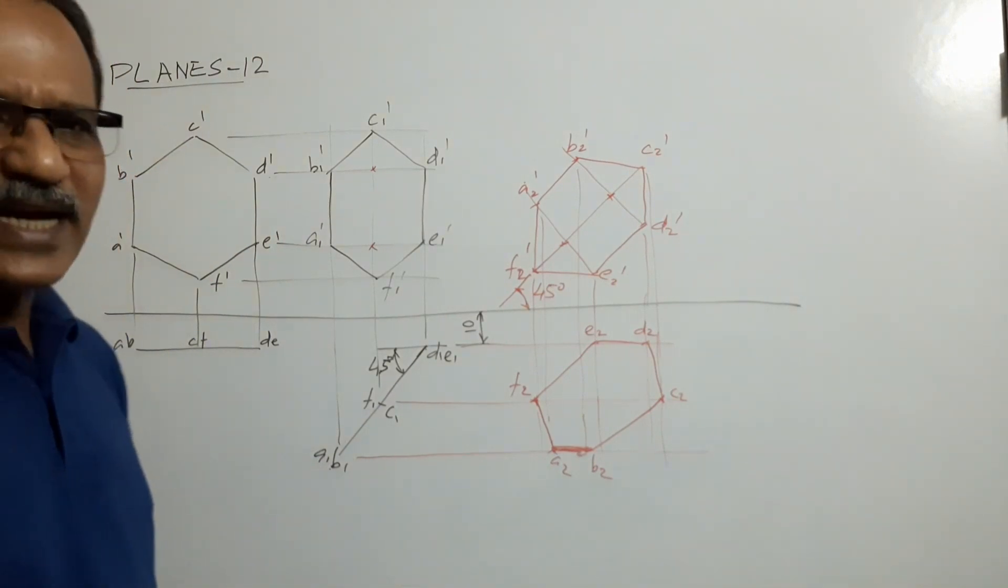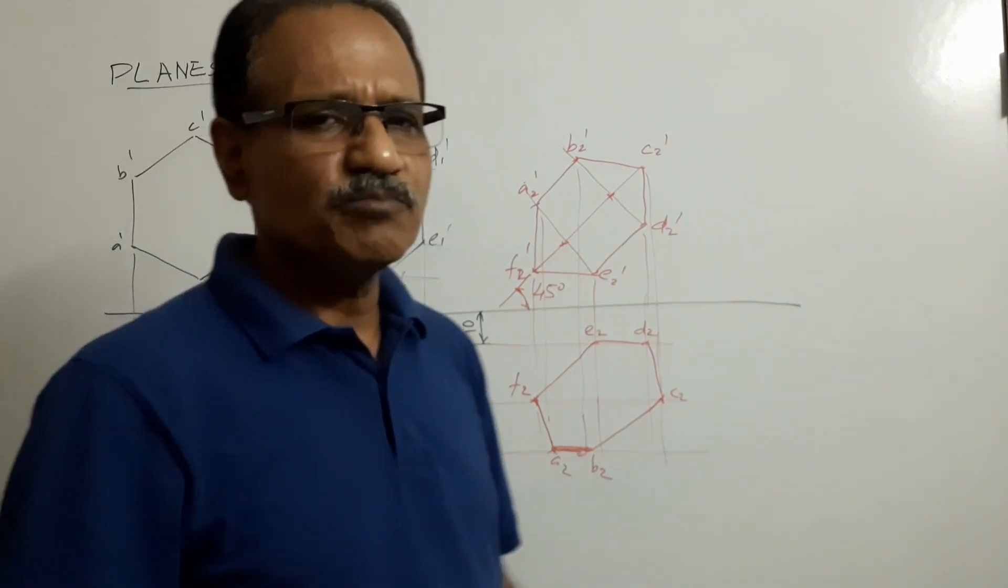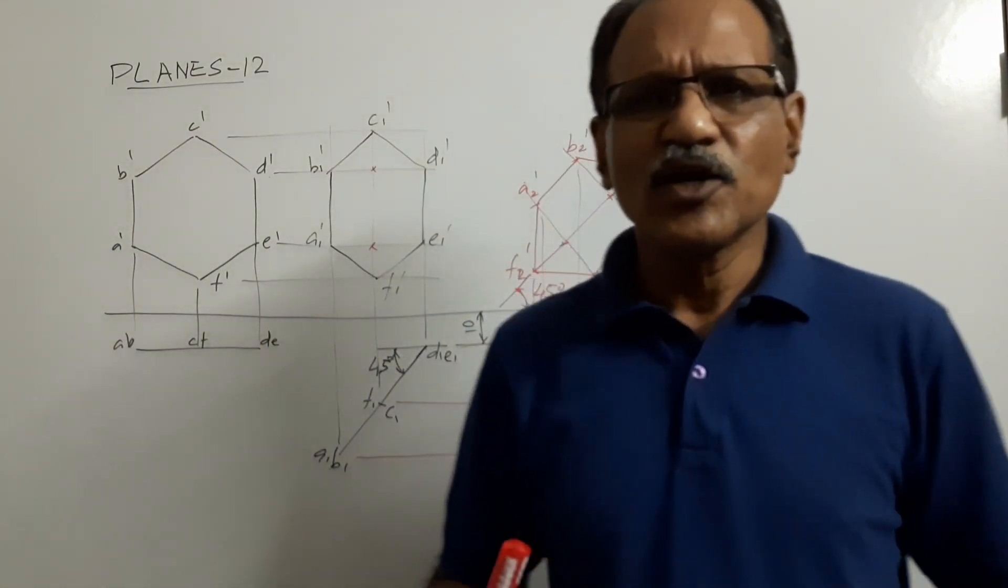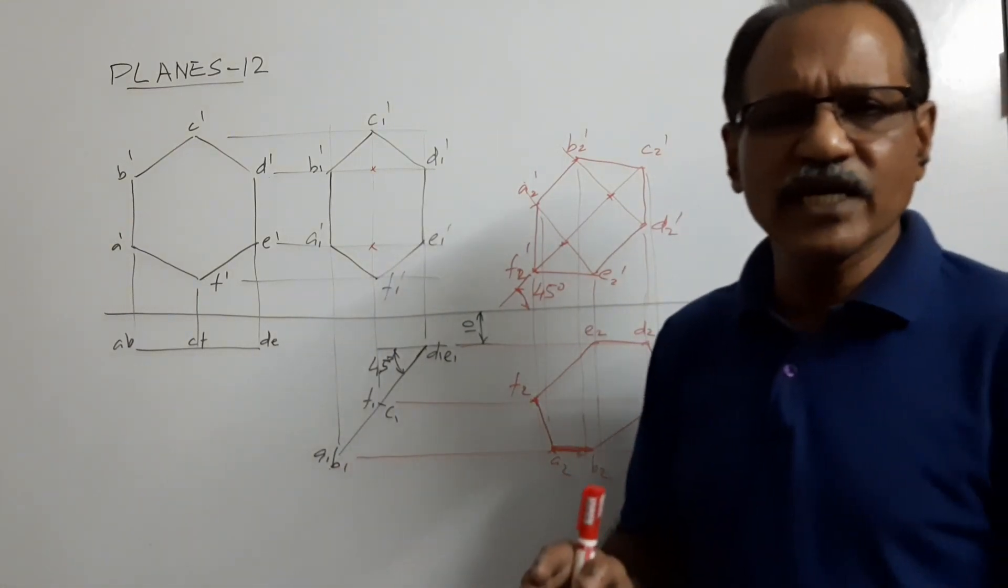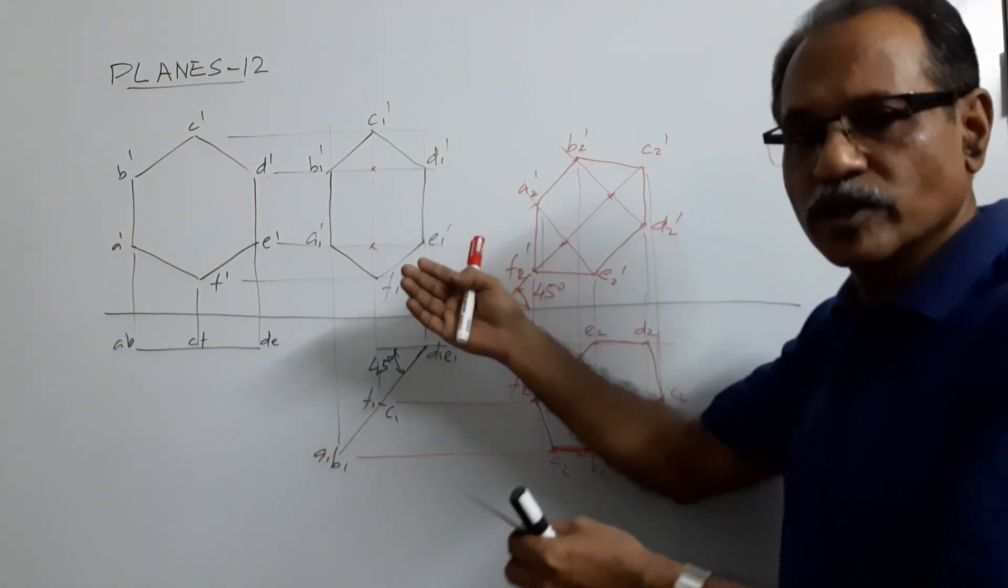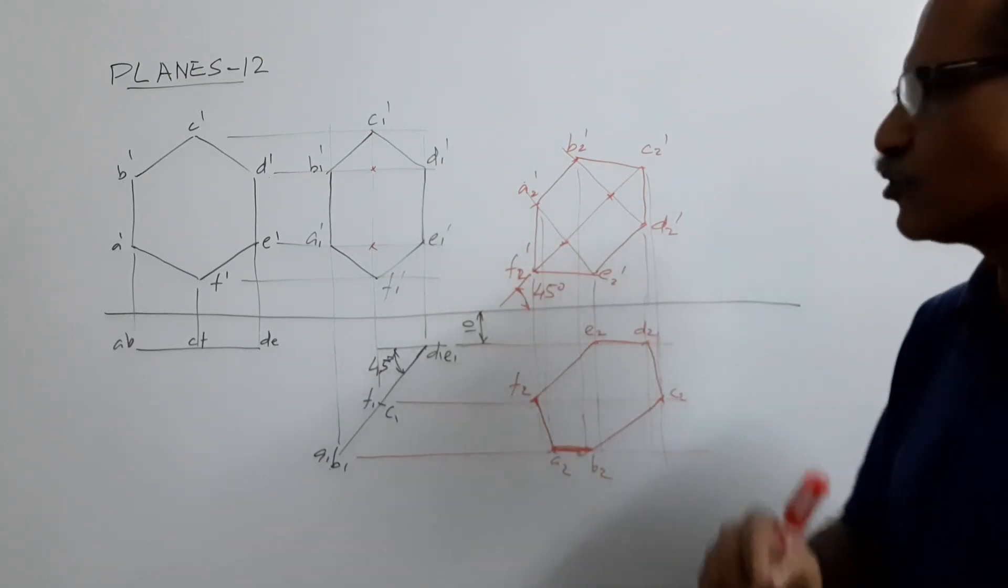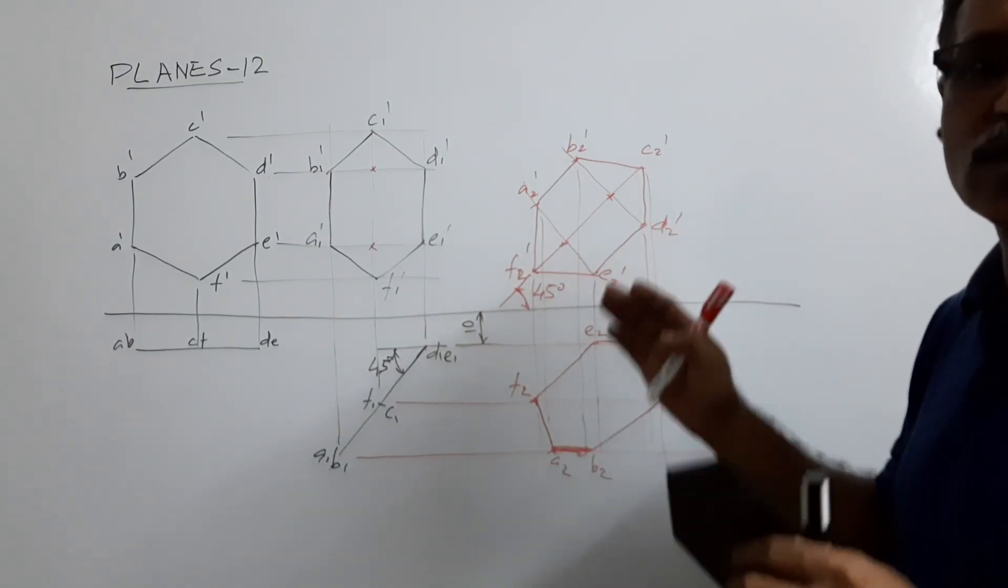This is a slightly difficult question because it is initially a little bit confusing to decide what is the simple position and how the subsequent positions are drawn. Slightly confusing, but once you understand it, it is okay.